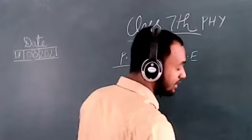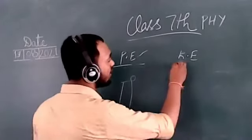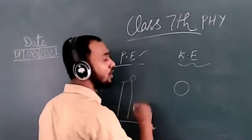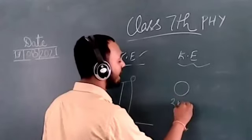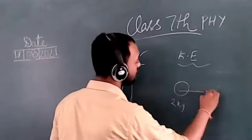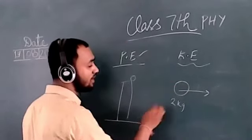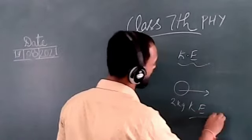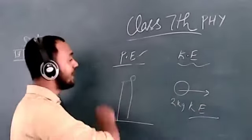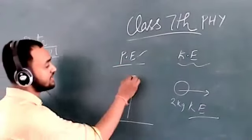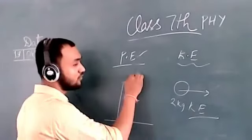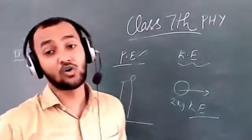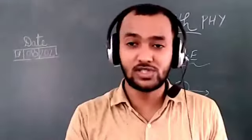Kinetic energy is the energy due to the motion of an object. Suppose a ball of mass 2 kg is moving — it possesses kinetic energy. So kinetic energy is due to the motion of a body, and potential energy is due to the position, shape, or configuration of a body.